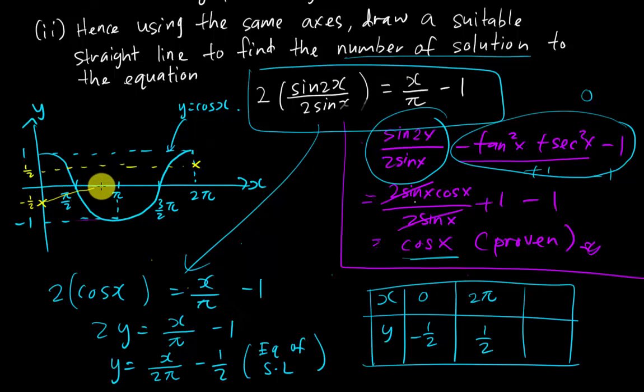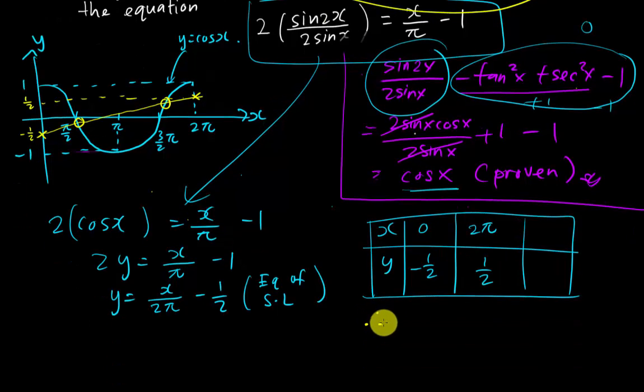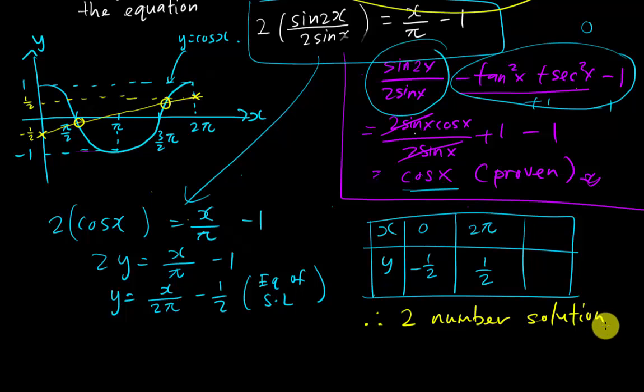And then you find the number of intersections, because this is what they want, number of solutions. So it will be 1 intersection, 2 intersections. So in this part I can easily get my answer by saying there are 2 number of solutions. Or you can say number of solution equals to 2.